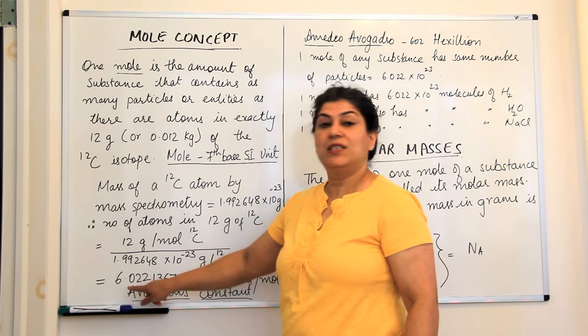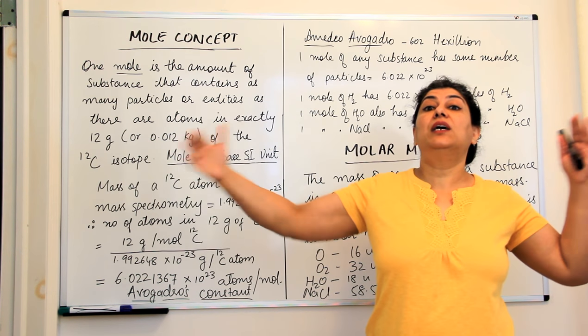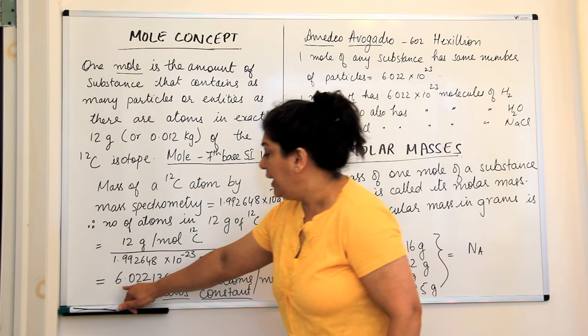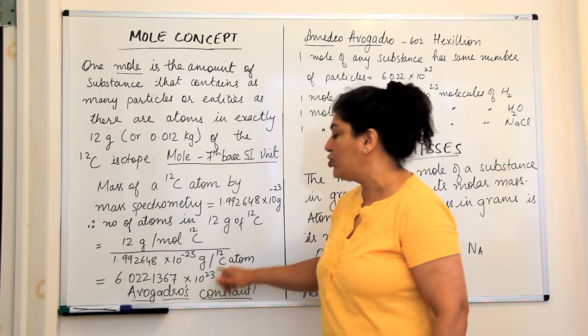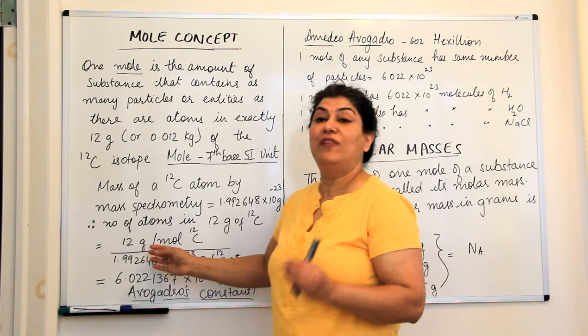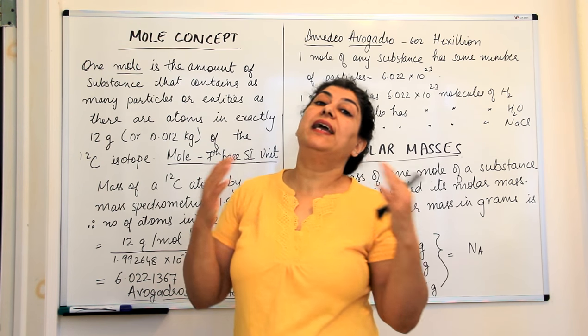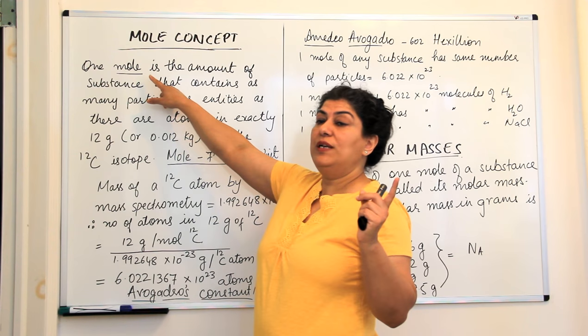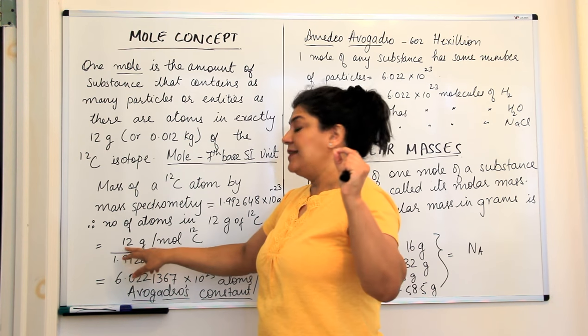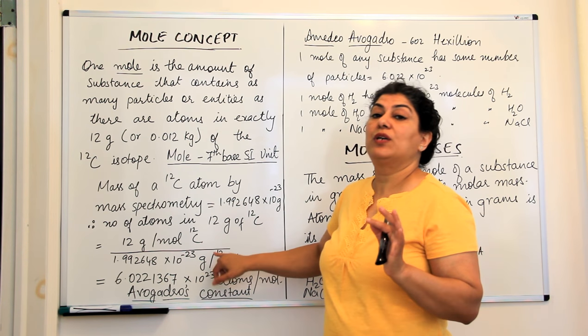When this was calculated, it was found this number comes to be equal to 60221367 with 16 zeros. Those many, a gigantic number. And if you abbreviate it or write it in scientific notation, it becomes 6.0221367 into 10 to the power 23 atoms of carbon-12 would be present in exactly 12 grams of carbon. This number makes one mole of not only carbon-12 but any substance because the definition of a mole is that it is that amount of substance of any substance which contains as many particles as are atoms in 12 grams of carbon-12 which is equal to 6.022 into 10 to the power 23 atoms.